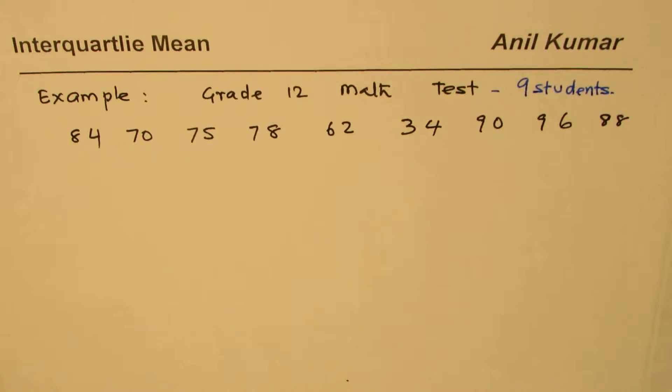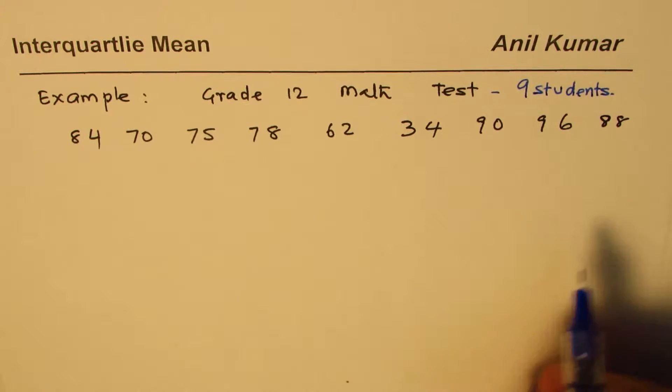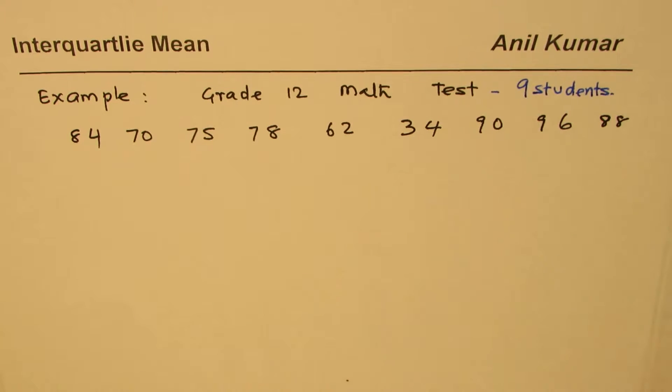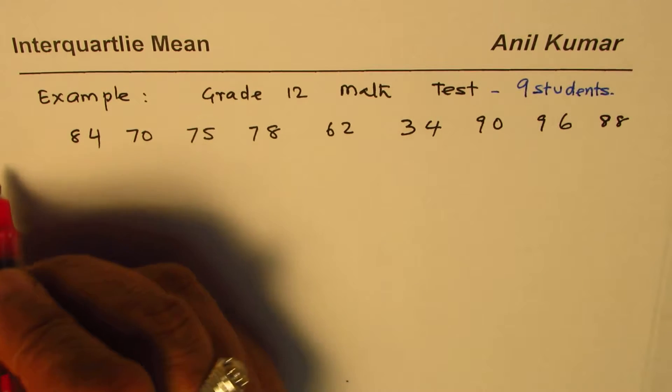Now for these nine students, let us find out what is the mean, the median which is second quartile, first quartile, and the third quartile. To find them we have to arrange them in proper order.